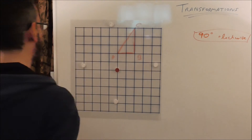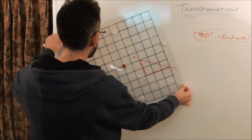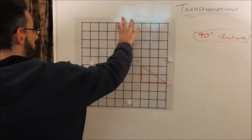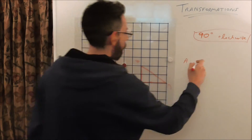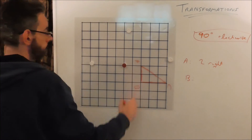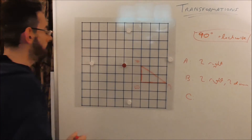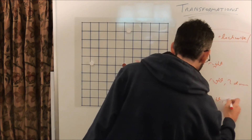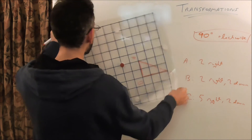So we're going to rotate the page 90 degrees and see where it ends up. If you rotate the page 90 degrees, you can see where the shape ends up relative to the centre of rotation. Corner A has ended up 2 to the right of the centre of rotation. Corner B has ended up 2 right, 2 down from the centre of rotation. And corner C has ended up 5 right, 2 down.